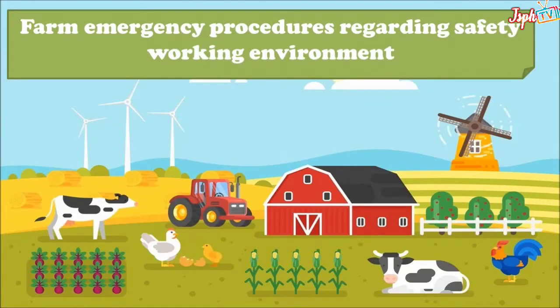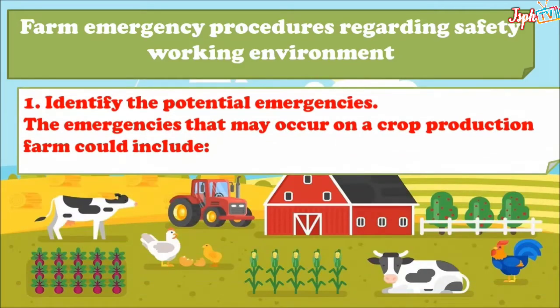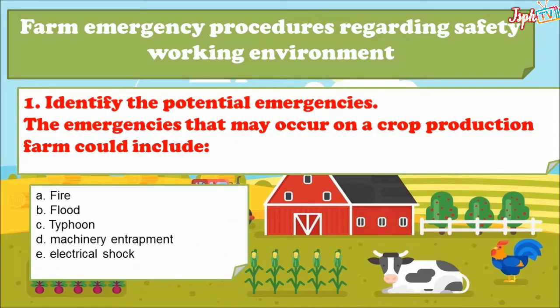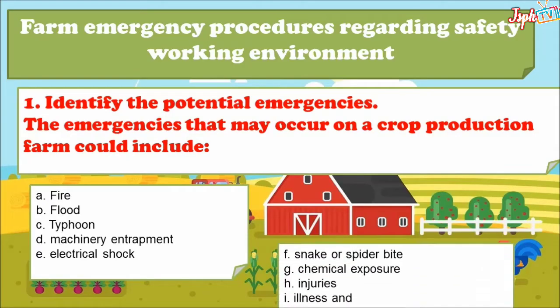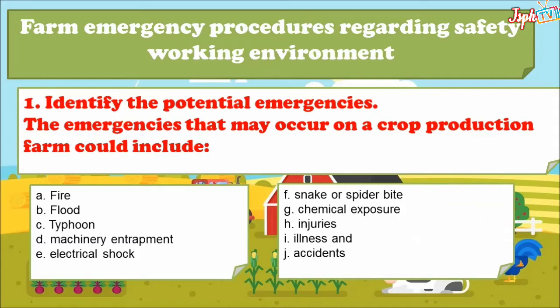For farm emergency procedures regarding a safe working environment, we have identified potential emergencies. The emergencies that may occur on a crop production farm could include fire, flood, typhoon, machinery entrapment, electrical shock, snake or spider bite, chemical exposure, injuries, illness, and accidents.